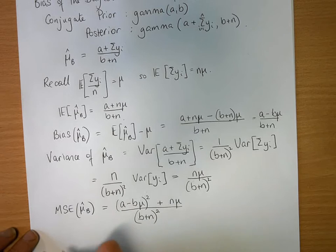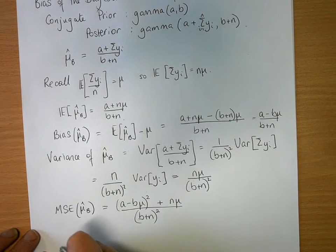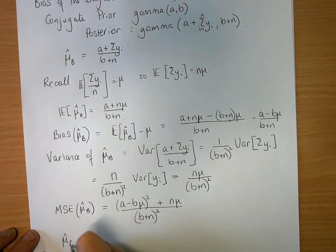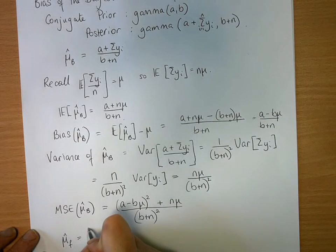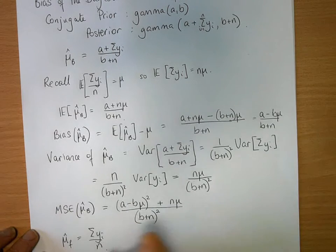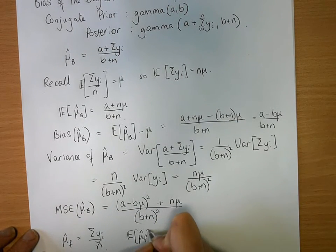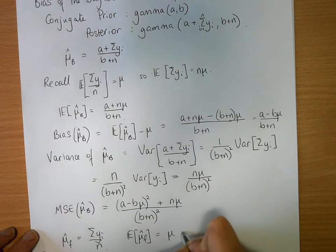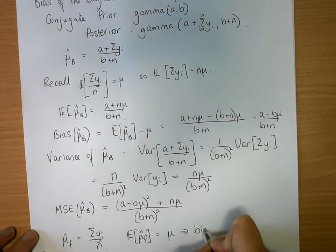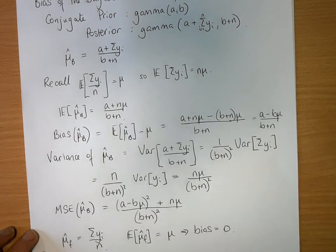The corresponding one, if you were using a frequentist estimator, you would use mu hat f for frequentist, will be the sum of y over n. So the expected value of mu hat f will be equal to mu, which implies the bias equals zero. And then you'd only have to think about the variance.